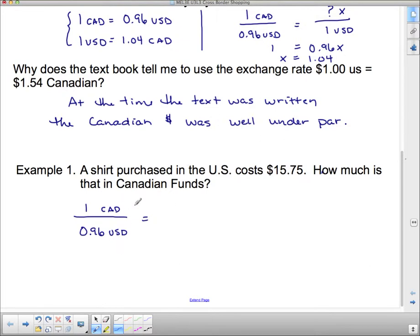And when we set it up, we have to make sure on the other side of the equal sign, when we set up our ratio, that the top is Canadian dollars, and the bottom is US dollars. Now, in this case, this says a shirt purchase in the US costs this. How much is that in Canadian funds? So, it's Canadian funds we don't know. So, we're going to put the X on top. And this is US dollars. So, it has to go on the bottom where US dollars are. So, 15.75.